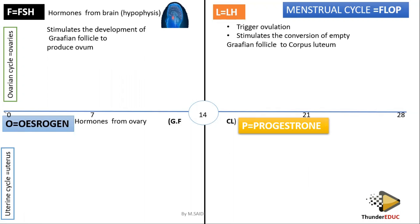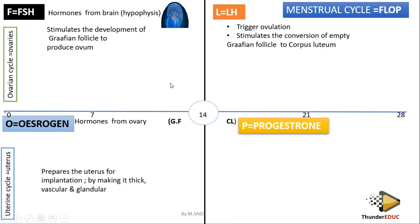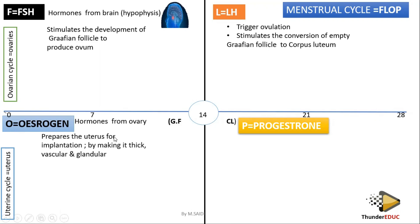Our bullet in this case is the ovum. So the moment it triggers ovulation, the ovum is being released. When the ovum has been released, that sac where the ovum was is now an empty graafian follicle. The luteinizing hormone also stimulates the conversion of the empty graafian follicle to corpus luteum.